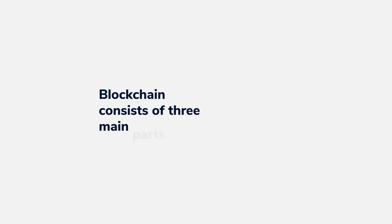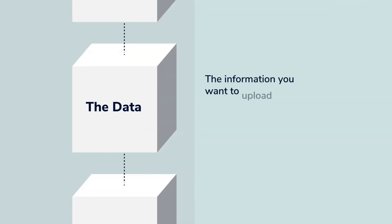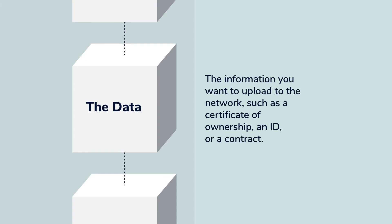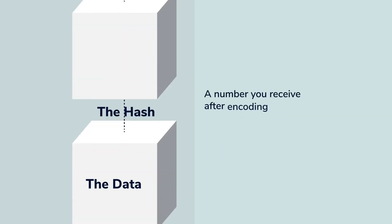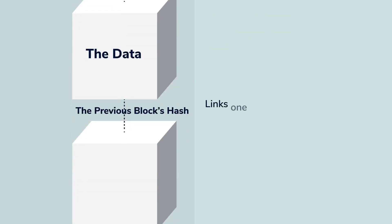Blockchain consists of three main parts: the data, or the information you want to upload to the network — such as a certificate of ownership, an ID, or a contract; the hash, which is a number you receive after encoding your data, made up of 64 characters; and the previous block's hash, which is what links one block of information to another.